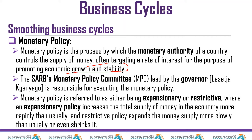Monetary policy is referred to as either expansionary or restrictive, and the same applies to the fiscal policy. The expansionary policy increases the total supply of money in the economy more rapidly than usual, and the restrictive policy does the opposite.